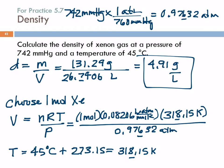Is that reasonable? We saw that nitrogen was about one-point-something and helium was less than one. But xenon is a much heavier atom, so its density will be greater — and 4.91 grams per liter makes sense. You can use the equation from the previous slide, or you can think it out — whichever works best for you.